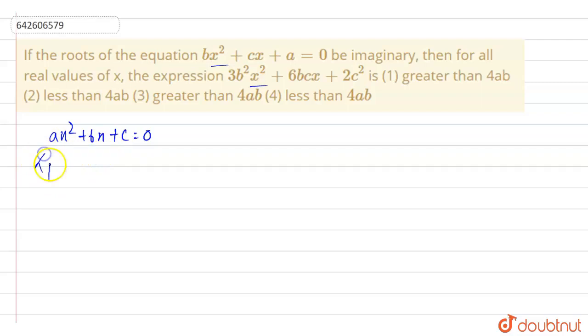So imaginary, the roots can be given as alpha, beta be its root. It can be given as minus b plus minus root under discriminant by 2a.